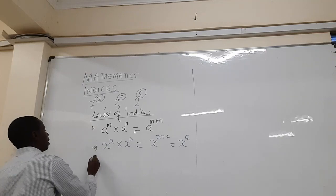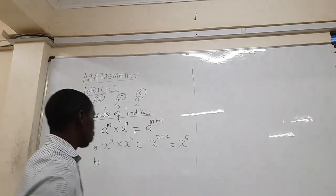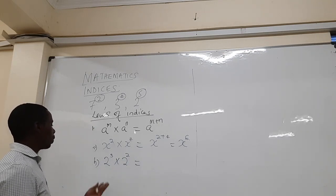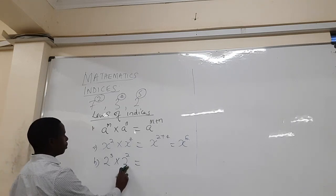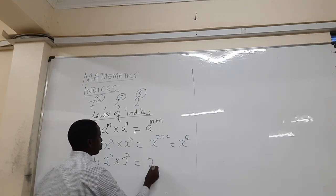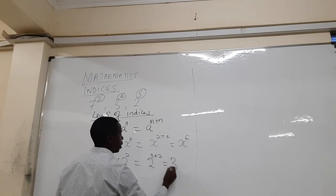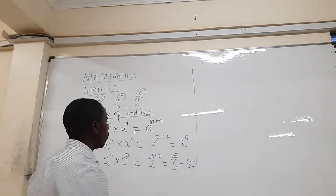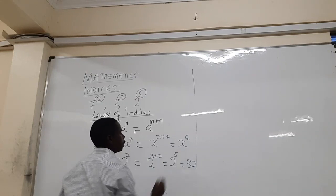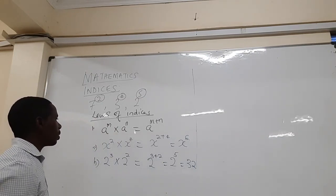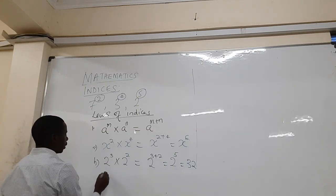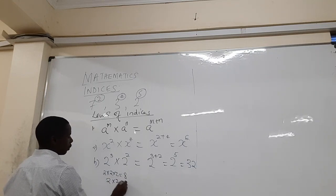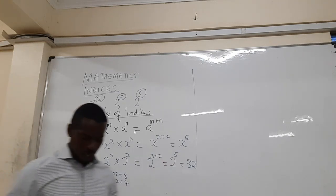Let's have another example: two cubed times two squared. The bases are the same — both are two — so we add the powers: three plus two gives two to the power five, which equals 32. We can verify: two cubed is two times two times two, which is eight; two squared is two times two, which is four; and eight times four is 32.